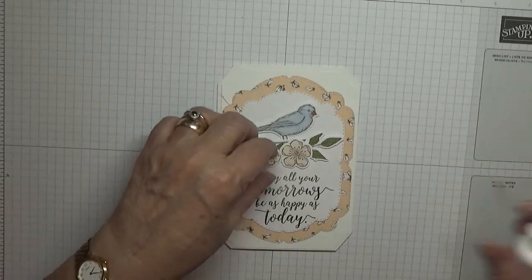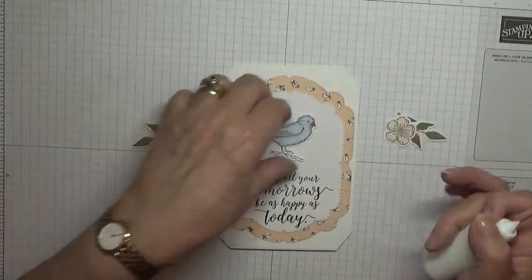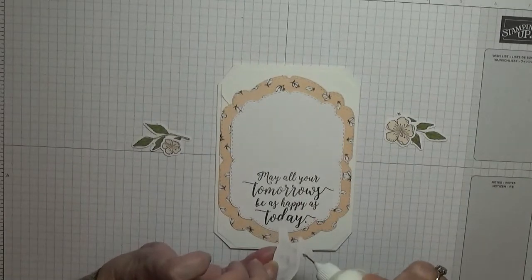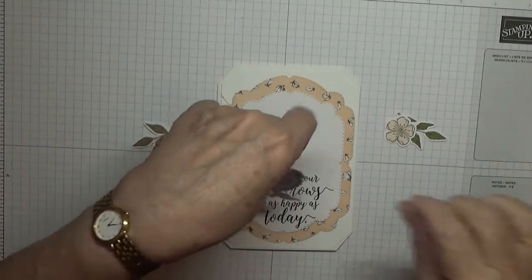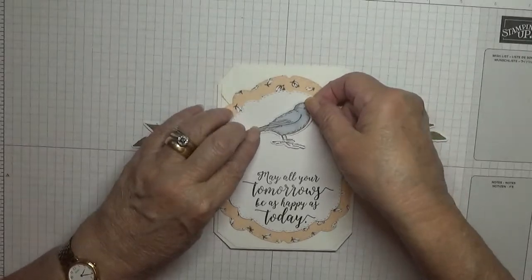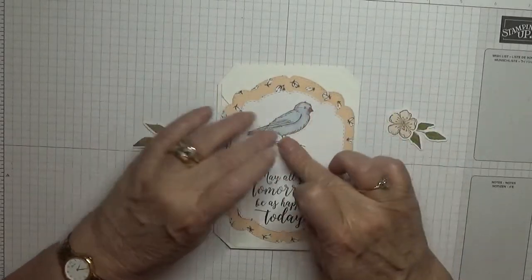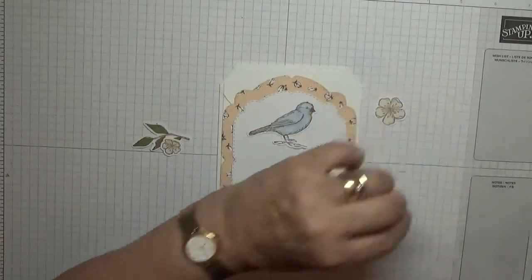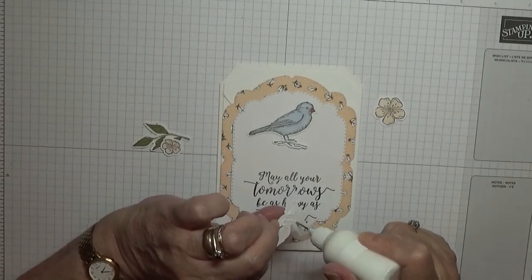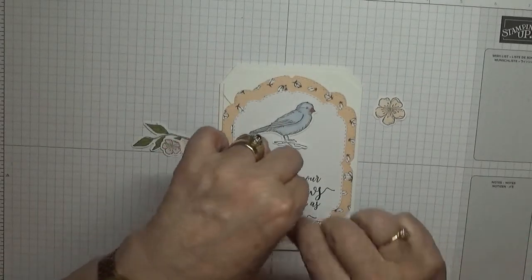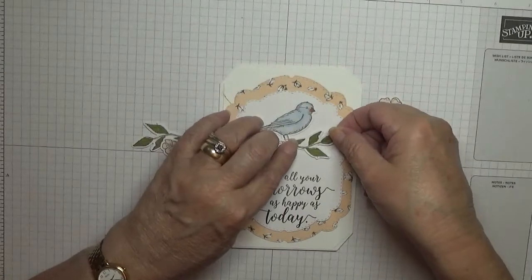So we will lay our bird down first, and then our branches, which will lay over his legs.